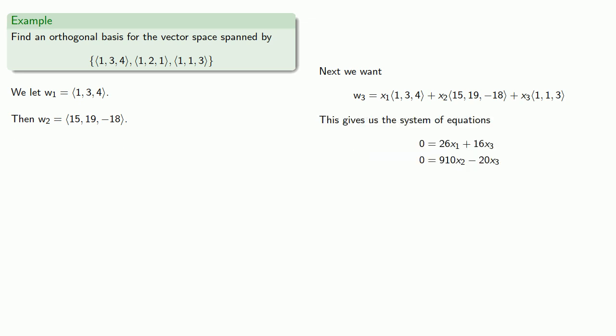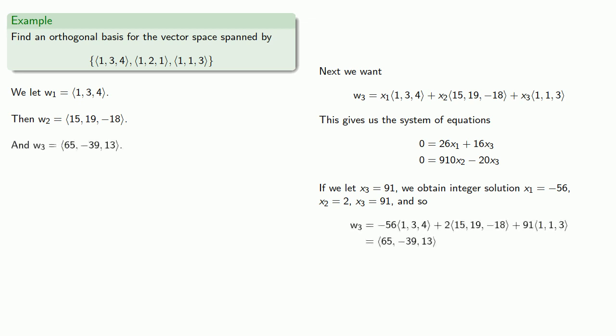And now I have a system of equations. Incidentally, a good check is that since the only non-orthogonal vector is supposed to be this last one, then each equation should only contain this last variable and one of the other variables. It's a nice continuing check on our work. And we can parameterize it. If we let x3 equals, well, how about 91? We obtain integer solutions, which gives us w3.